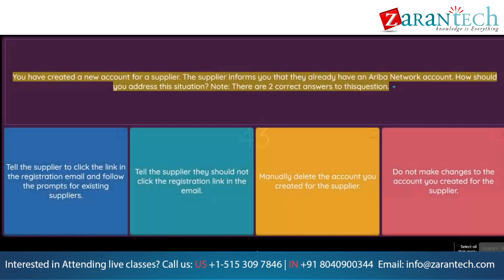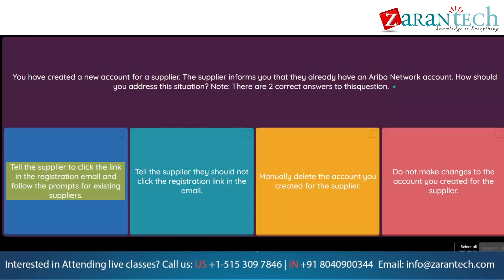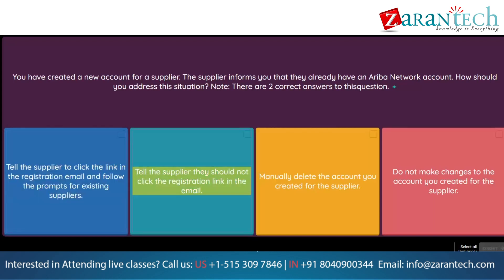Question: You have created a new account for a supplier. The supplier informs you that they already have an Ariba Network account. How should you address this situation? Note: there are two correct answers. Option 1: Tell the supplier to click the link in the registration email and follow the prompts for existing suppliers. Option 2: Tell the supplier they should not click the registration link in the email. Option 3: Manually delete the account you created for the supplier. Option 4: Do not make changes to the account you created for the supplier.